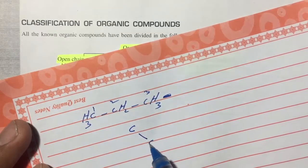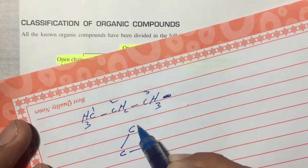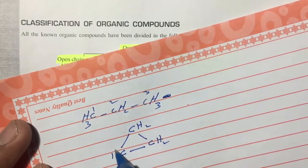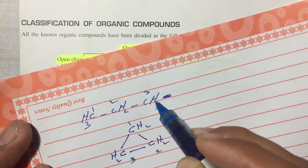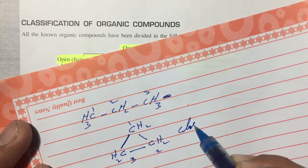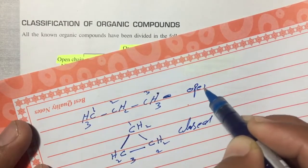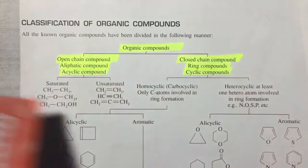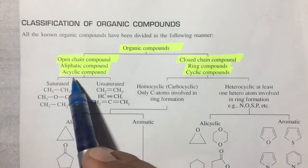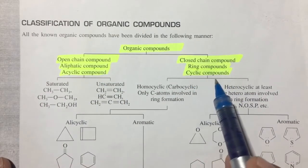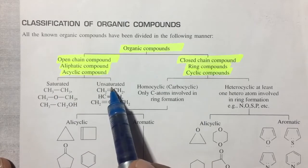But if you join these carbons together — first carbon, second carbon, third carbon — and attach the first carbon and last carbon to each other, it becomes a closed chain compound. Open chain hydrocarbons are also called aliphatic or acyclic hydrocarbons. Open chain compounds have two types: saturated and unsaturated.